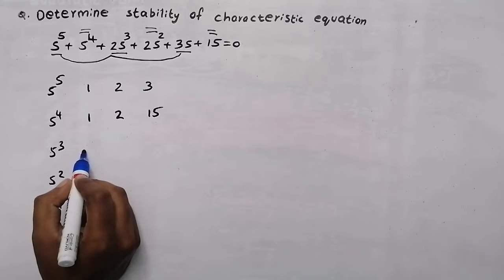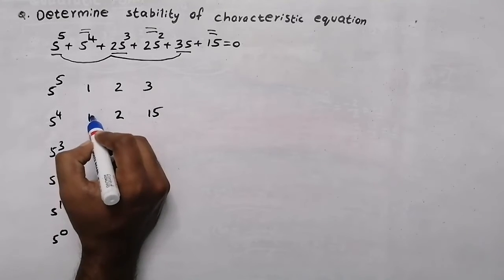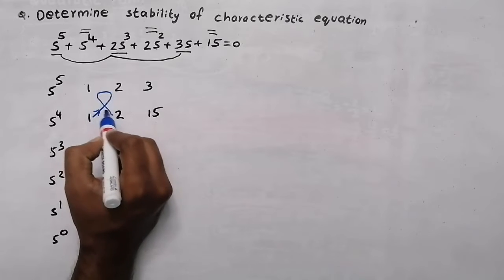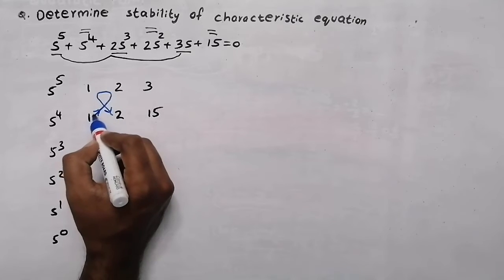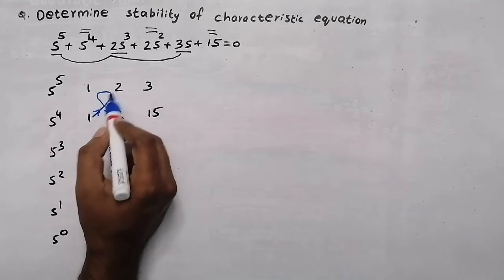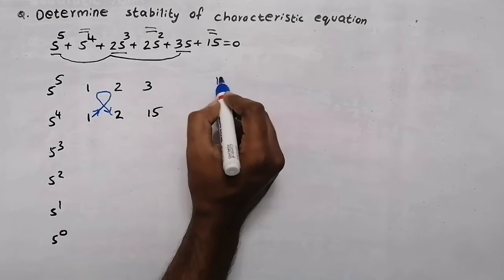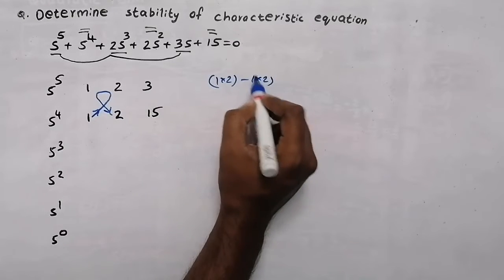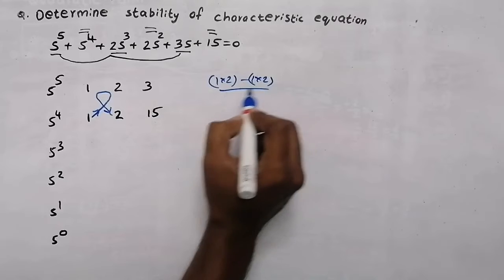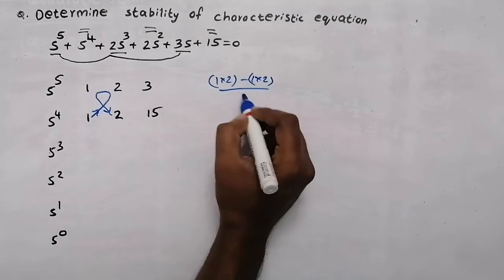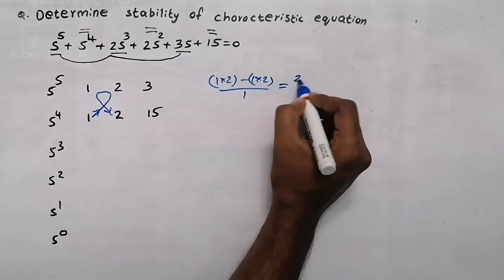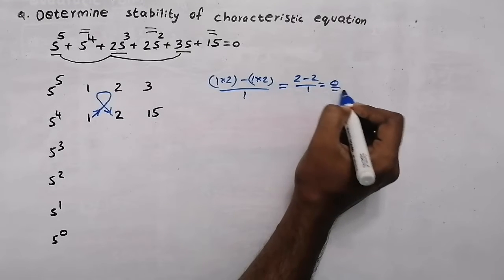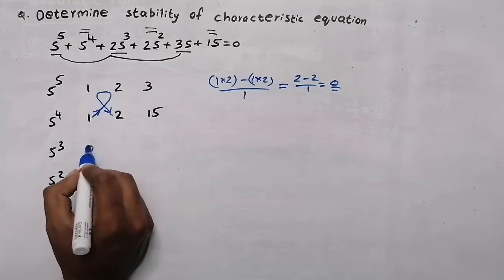Now, in order to get this element, we will do the multiplication in this direction. Starting from 1: 1 into 2 minus 1 into 2, divided by the starting element which is 1. So, 1 into 2 is 2, then minus 2 by 1. It will be 0. So this value will be 0.